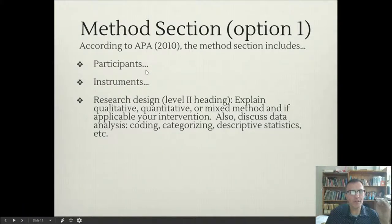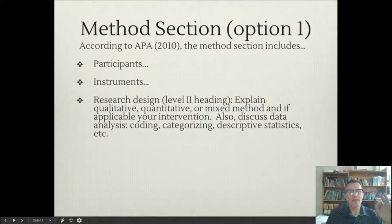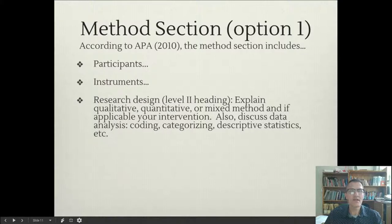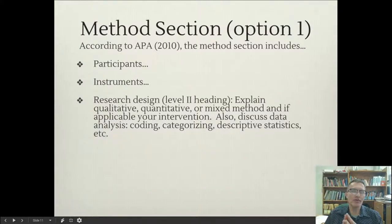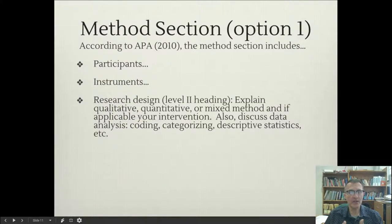In the Participants section, you want to introduce your participants and introduce their pseudonym. Make sure that you're not using any real names — you want to respect their confidentiality. You don't want to mention anyone's real name, nor do you want to mention any of the schools by name. You can describe the schools and describe the participants: how old are they, what is their experience level, how long have they been teaching, how long have they been teaching at a particular school. Any personal information that you collect from these participants, I would include in this first section.